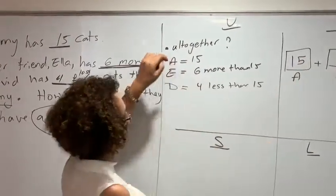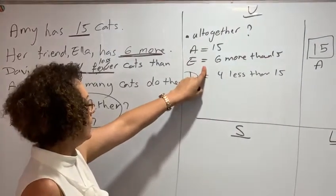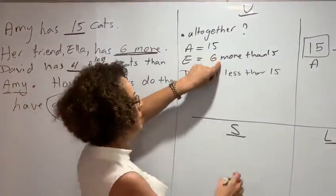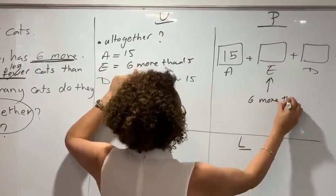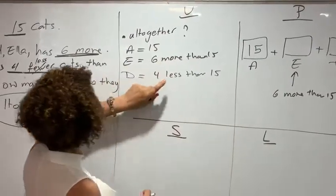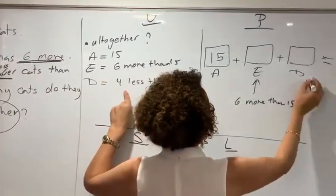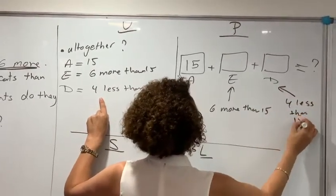Do I know the second quantity? Well, I know something about it. I know that it is 6 more. So 6 more than 15. And they need to work it out first. And then David has 4 less than 15.